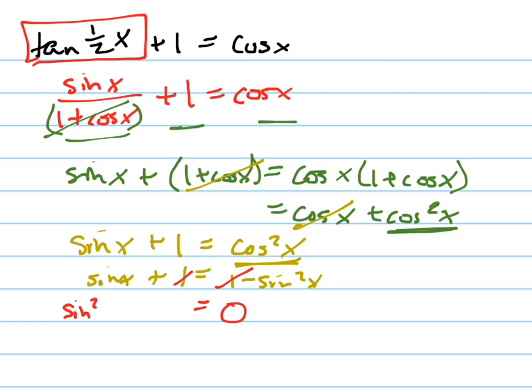Which means I can move that sin²(x) over by adding it. Remember, there's a negative there, so I'm adding it to both sides, making a positive on that side. Now I've got a quadratic equation.